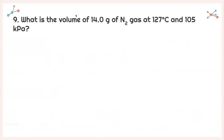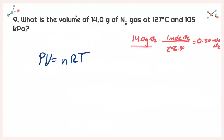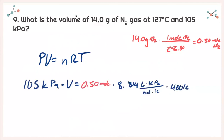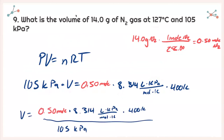For number nine, what is the volume of 14.0 grams of nitrogen gas at 127°C and 105 kilopascals? I write PV = nRT. Again given grams, not moles, so I use the molar mass of N₂ (28.00 g/mol): 14.0 g gives 0.50 moles of N₂. Plugging in: pressure is 105 kPa, so I choose the R value in kPa units. 127°C converts to 400 K. Isolating V and solving, I get a volume of 15.8 liters.